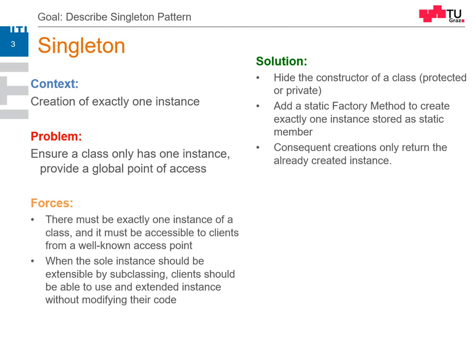Consequent callings of this factory method should only return the already-created instance. Here we can decide whether we create it immediately at the first usage or when the program starts up. We also have to avoid prohibited deep copying of the object, so the assignment operator has to be hidden as well.